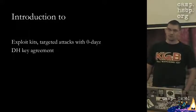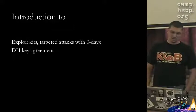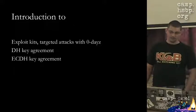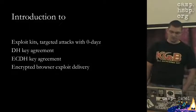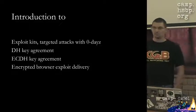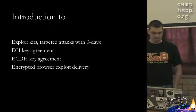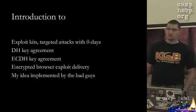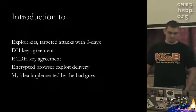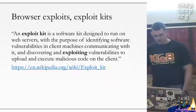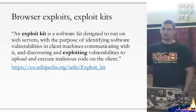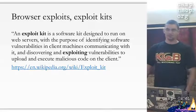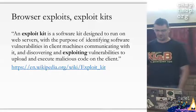I will talk briefly about Diffie-Hellman key agreement, elliptic curve Diffie-Hellman key agreement, and how this can be used in encrypted browser exploit delivery - so-called Iron Squirrel - and how my idea was already implemented by the bad guys. An exploit kit exploits a vulnerability, and when it comes to browser exploit kits, they exploit vulnerabilities in a browser.